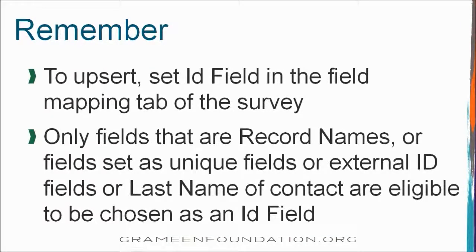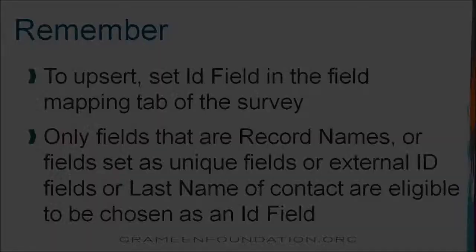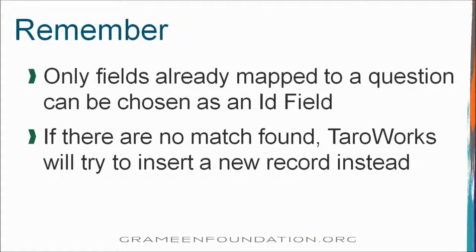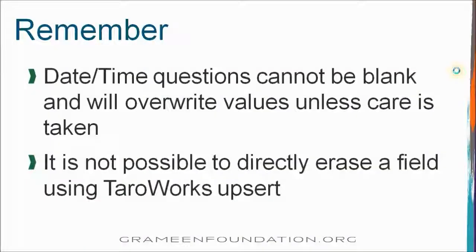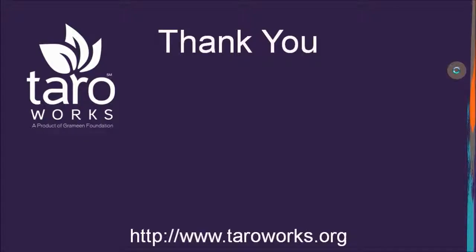To upsert, set the ID field in the field mapping tab of the survey. Only fields that are record names, or fields set as unique fields or external ID fields, or last name of contact, are eligible to be chosen as an ID field. Only fields already mapped to a question can be chosen as an ID field. And if no match is found, Taraworks will try to insert a new record instead. To update a field, just enter a new value. To keep the value of a field the same, just don't answer that question. Finally, date and time questions cannot be blank and will overwrite values unless care is taken. It is also not possible to directly erase a field using Taraworks upsert. For more information, please refer to Taraworks documentation. Thank you very much for watching.